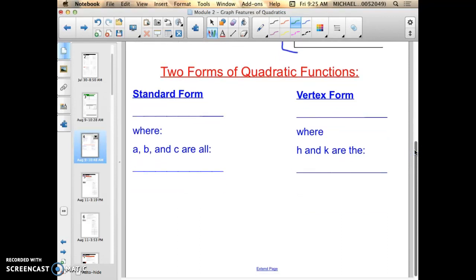Let's start with standard form: y equals ax squared plus bx plus c. Hopefully that looks familiar to you. We've been talking about that before. a, b, and c are all real numbers. Technically a and b are coefficients and c is the constant, because it doesn't have a variable with it and so it would never change.